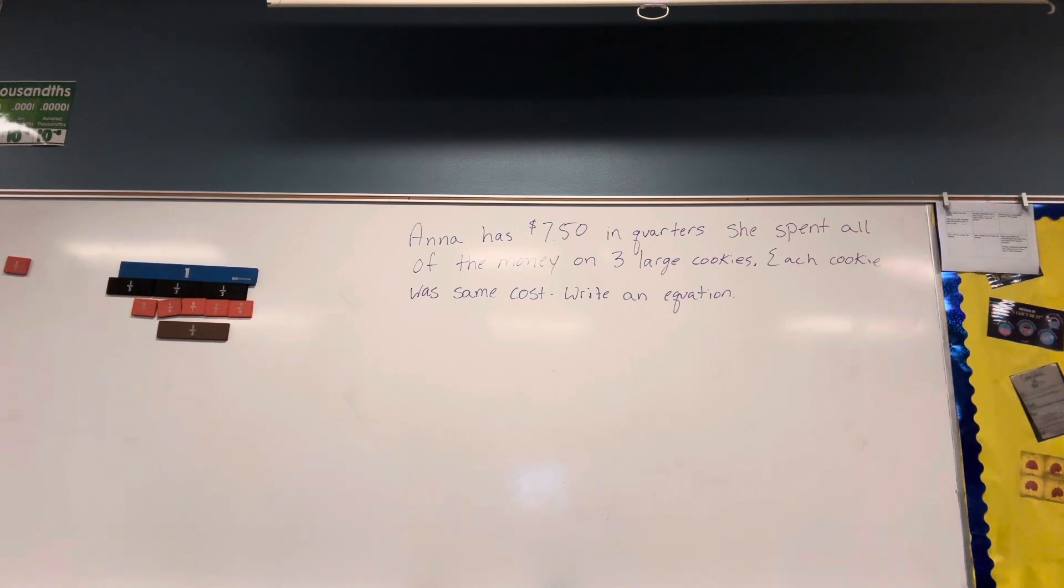Answer choice C says each cookie costs $45. Seems like a lot of money for a cookie. That leaves us with each cookie costs $1.25, or each cookie costs $2.50.